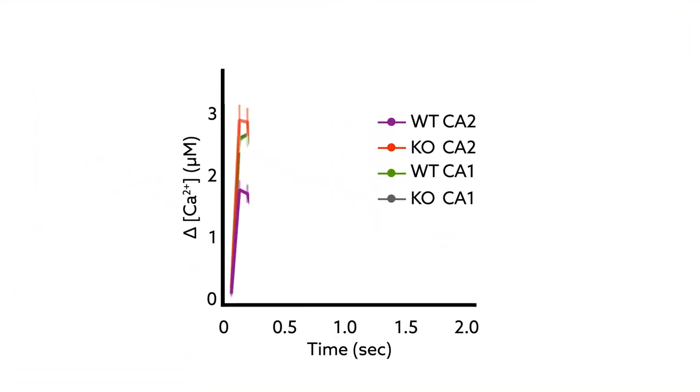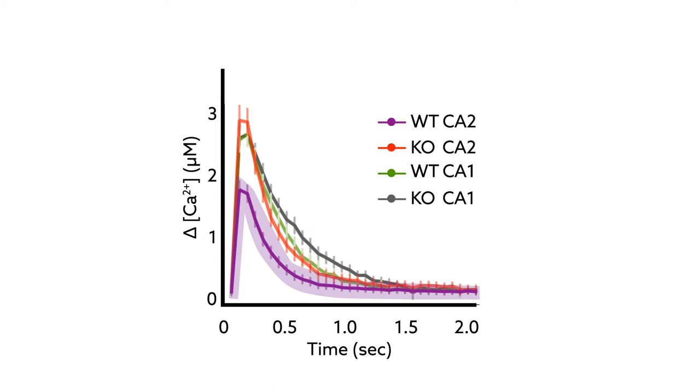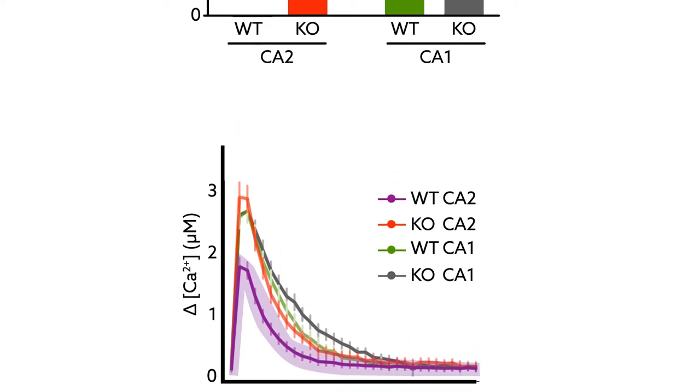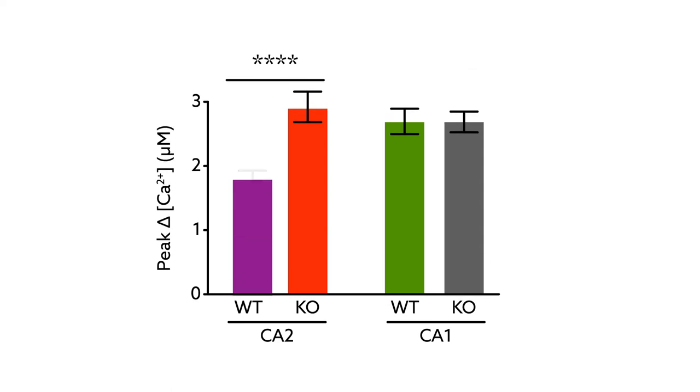They found that the peak elevations in calcium evoked by glutamate uncaging were significantly smaller in spines from the wild-type neurons than in those lacking RGS14. Uncaging also elicited significantly smaller calcium transients in the dendrites of the wild-type neurons. These findings indicate that RGS14 modulates calcium levels in CA2 neurons during synaptic activity.